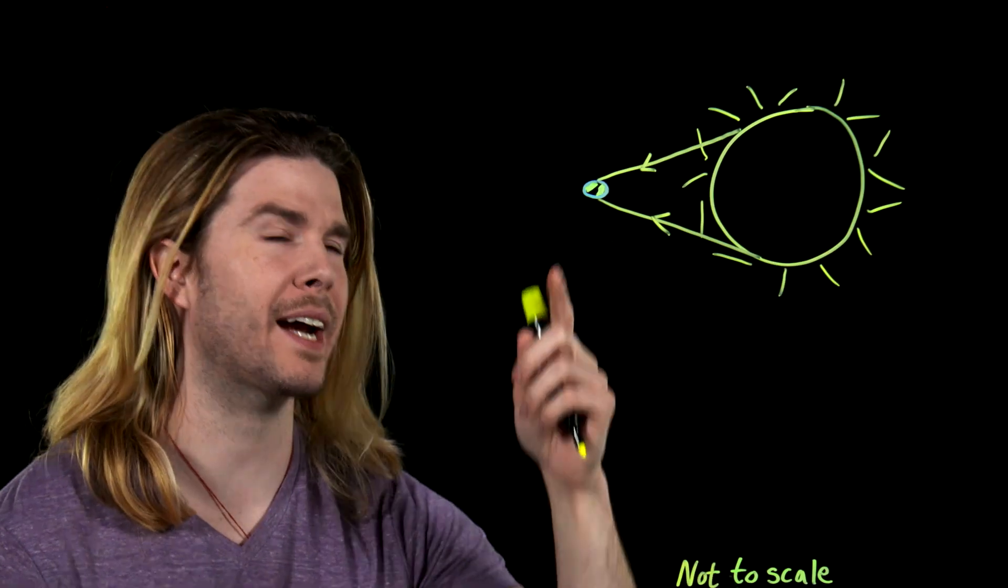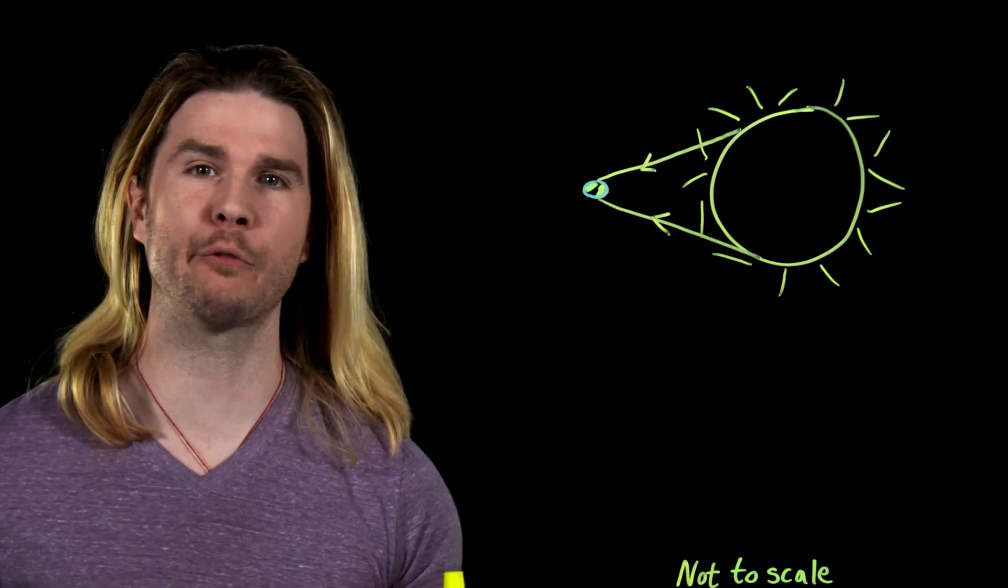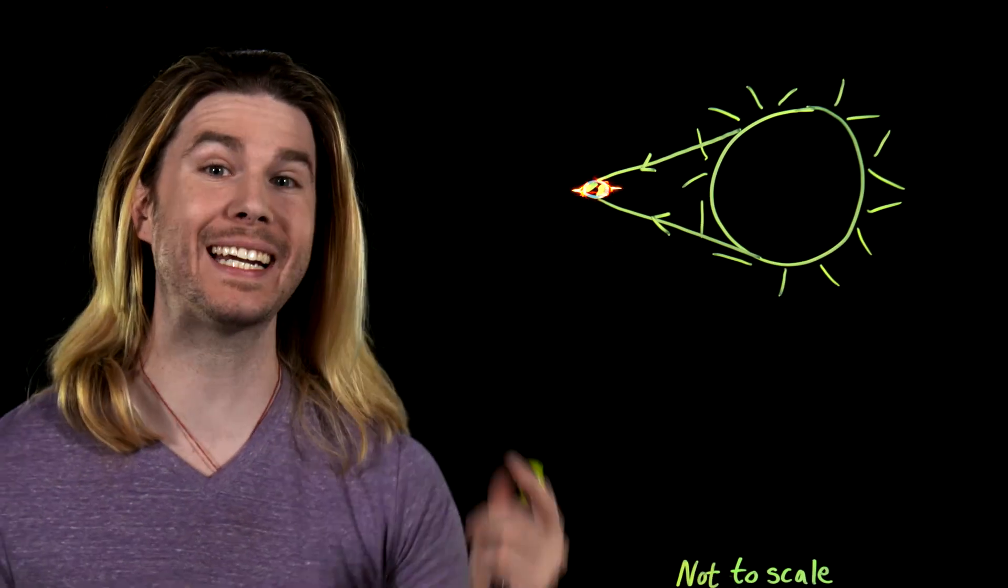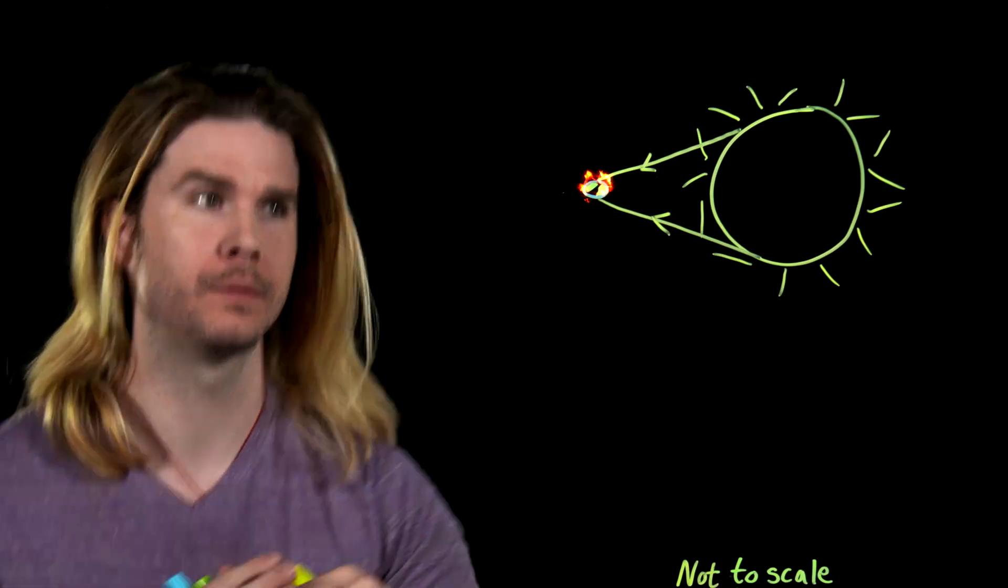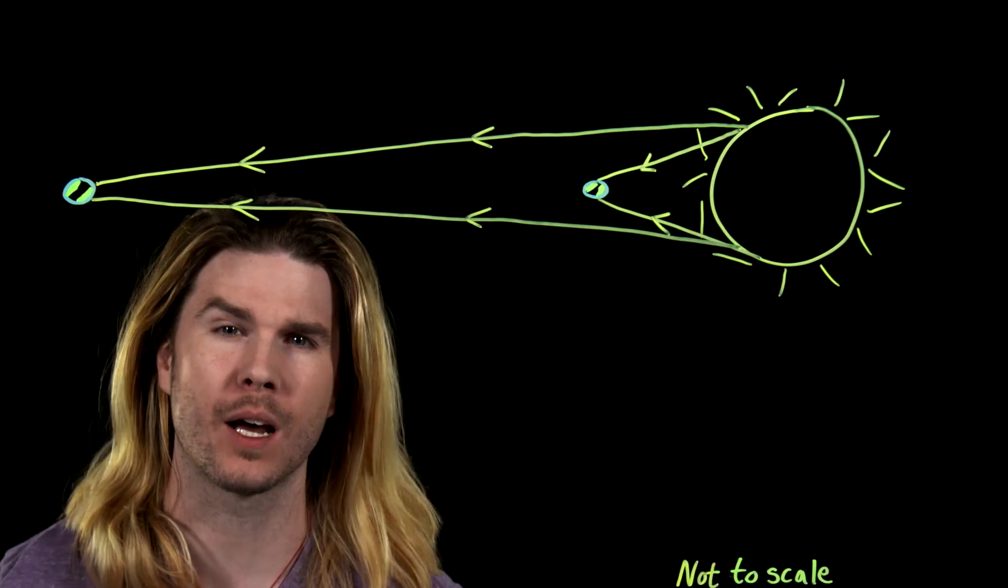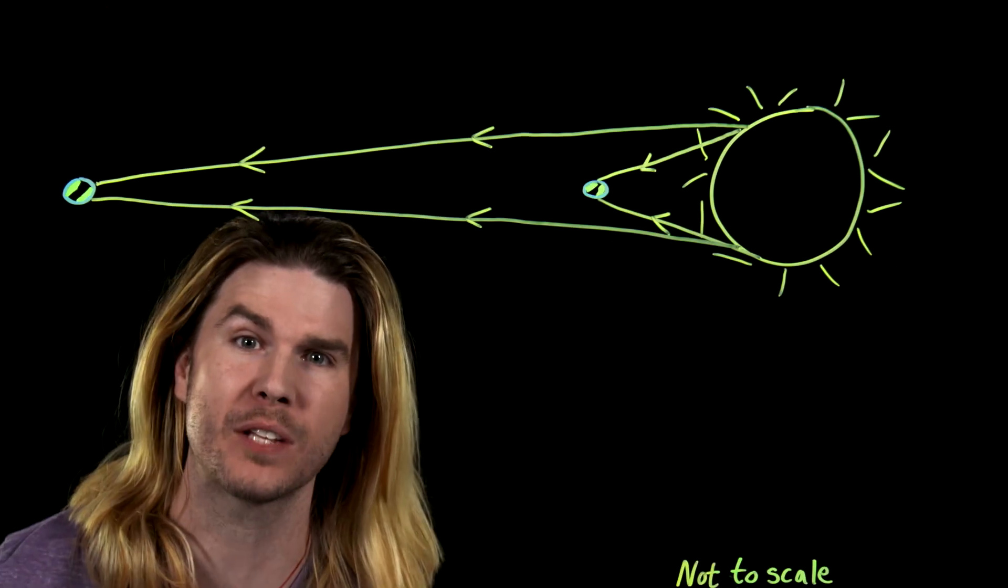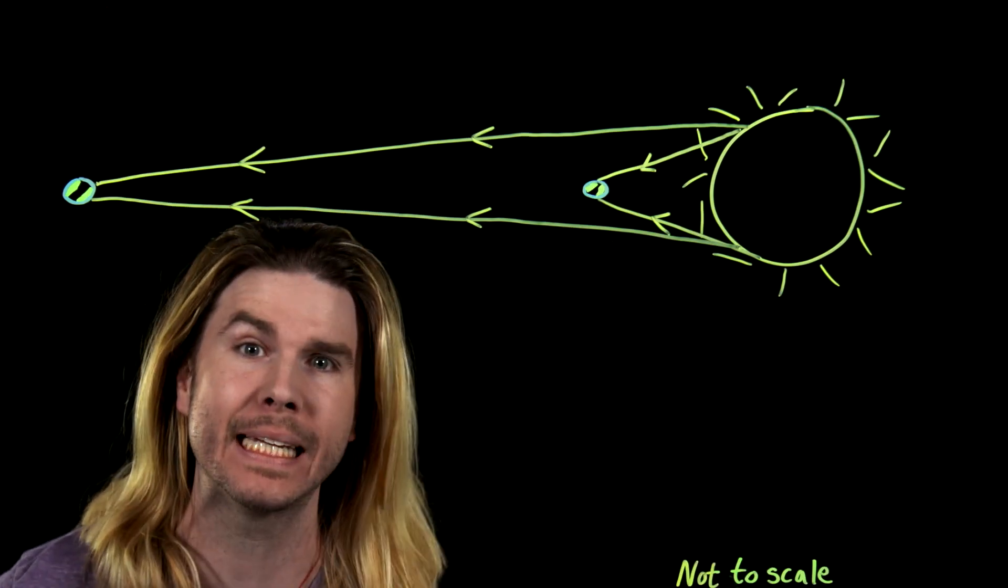If the Earth was right next to the sun, yes, it would be on fire, but also the rays of light hitting the Earth from the sun could differ by very large angles. But we are not right next to the sun. We are a full eight light minutes away, 150 million kilometers.